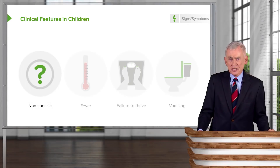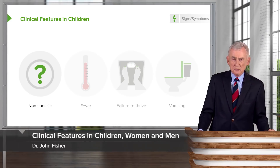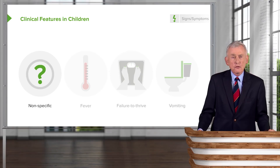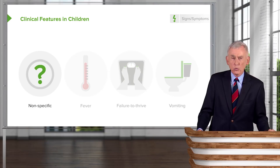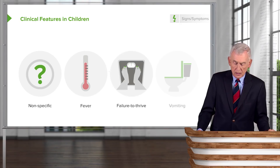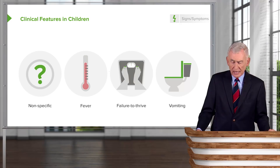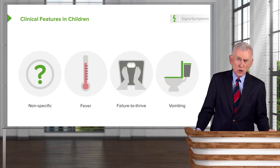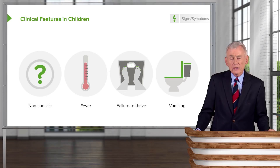How does cystitis present in children? It's pretty nonspecific. You can't easily tell unless the child is, for example, having enuresis — a child who wasn't bedwetting and now starts bedwetting. Fever may be a clue, as well as failure to thrive in infants. If they start vomiting, a good pediatrician or family physician is going to be thinking of an infection.